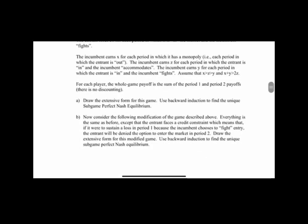Now we have payoffs. The entrant earns zero for each period when it's out of the market, one for each period where it's in the market and the incumbent accommodates, but loses one each period it's in the market and the incumbent fights. The incumbent earns X for each period in which it has a monopoly, Z for each period the entrant is in and the incumbent accommodates, and Y when the entrant is in and the incumbent fights. Assume no discounting. Draw the extensive form game and use backward induction to find the unique subgame perfect Nash equilibrium.